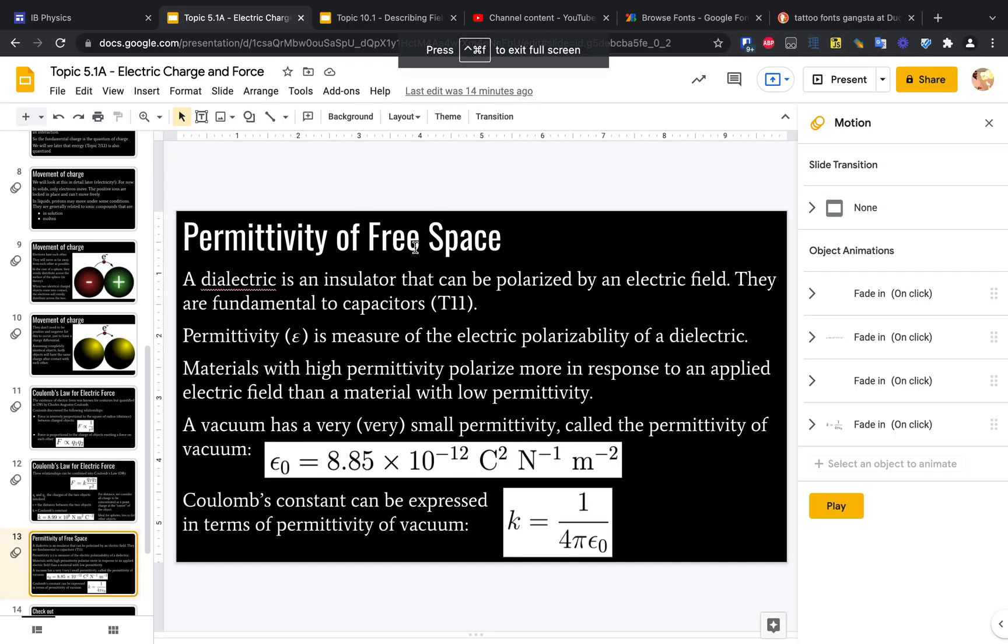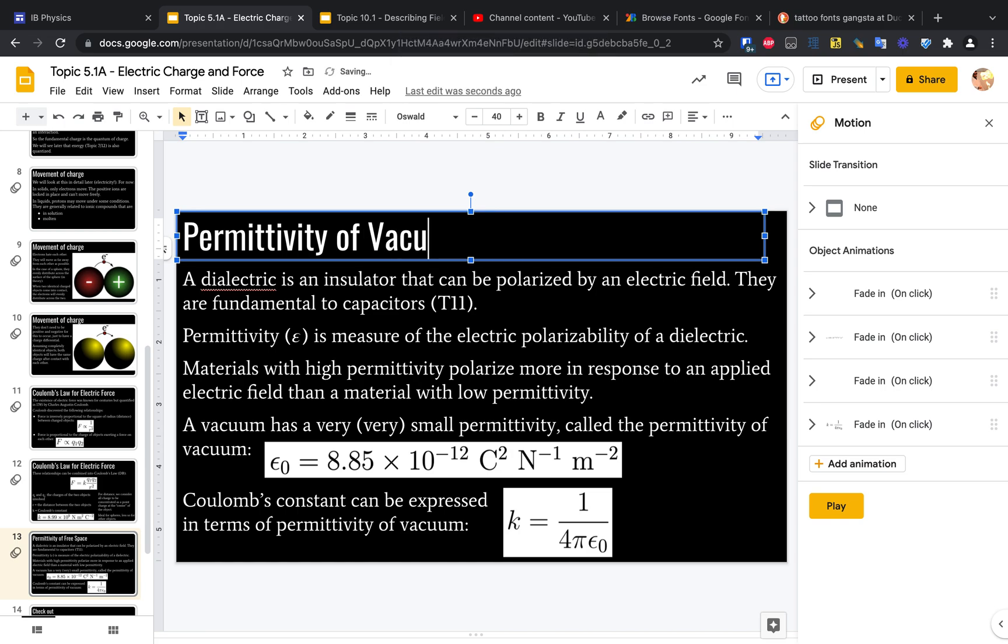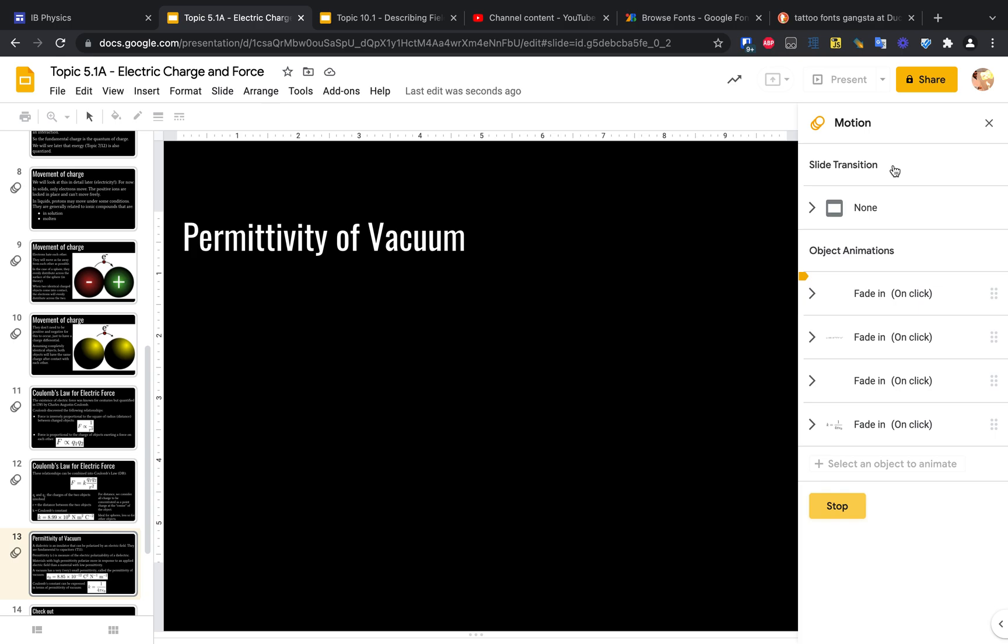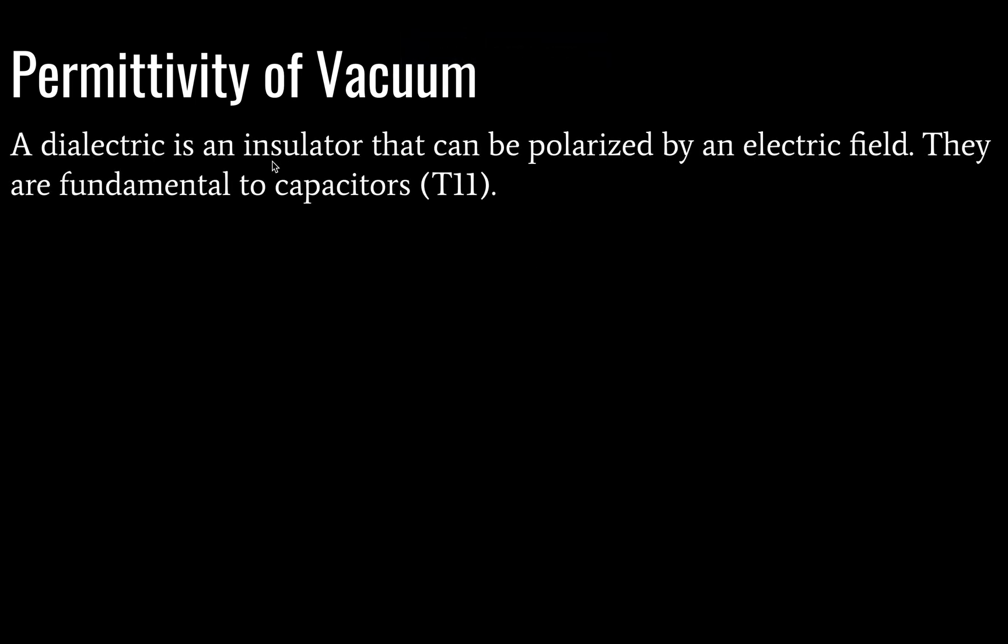Next, we need to talk about permittivity of free space, or rather, I think the book calls it permittivity of vacuum. Guys, I don't edit my videos. That's for people who monetize their videos, which I definitely do not. Back at it. So permittivity of vacuum. Here we go. First thing we need to understand is that a dielectric is an insulator that can be polarized by an electric field. This isn't part of the syllabus. You don't need to know this, but if you're going to understand what permittivity of vacuum is, it's going to be helpful to define this stuff even though it's not going to come up on an exam. These dielectrics are a big part of topic 11 where you will need to be a little more familiar with this stuff, but for topic 5, you don't need to know it. I'm just telling you so you understand what permittivity is.